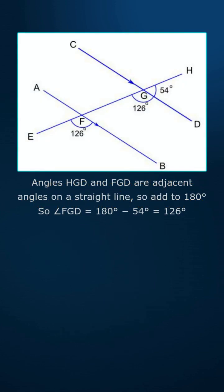Angles HGD and FGD are adjacent angles on a straight line, so add to 180 degrees. So angle FGD equals 180 degrees minus 54 degrees equals 126 degrees.